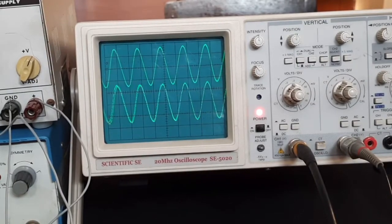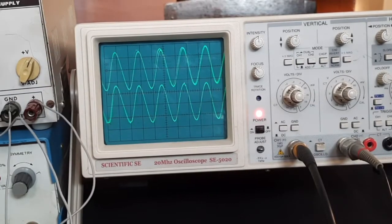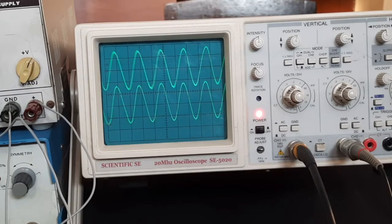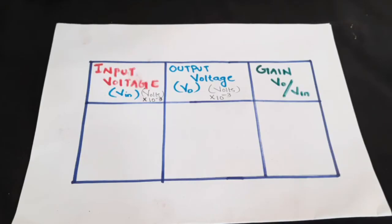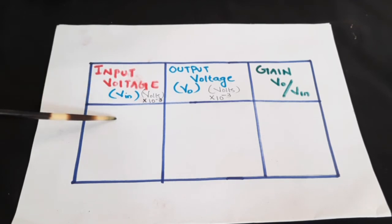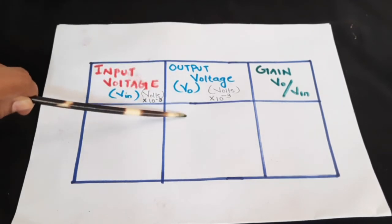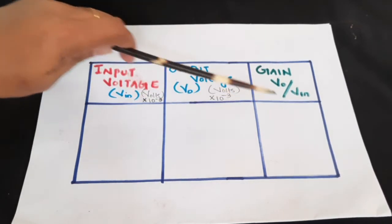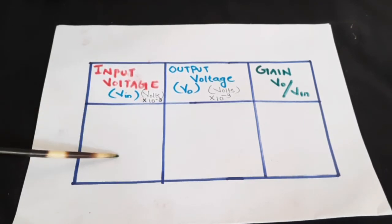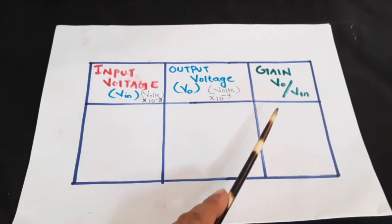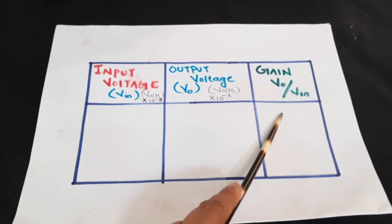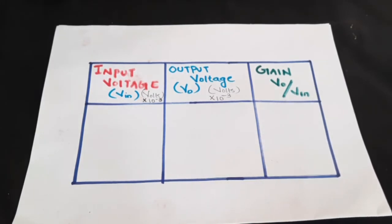You can observe the input and output. In this manner you can repeat the experiment. This can be the observation column. You can note down the input voltage, measure the output voltage, and calculate the gain. Repeat this for various values of input voltage. You can always see the gain would be one. Vout by Vin will always be one for the voltage follower.